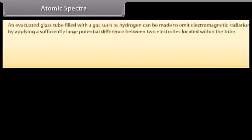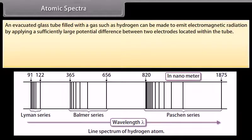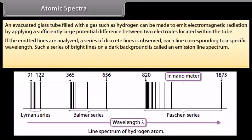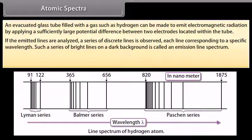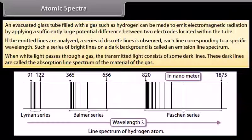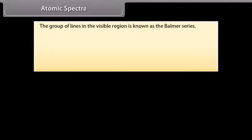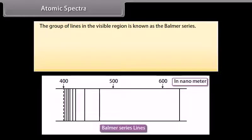An evacuated glass tube filled with a gas such as hydrogen can be made to emit electromagnetic radiation by applying a sufficiently large potential difference between two electrodes. If the emitted light is analyzed, a series of discrete lines are observed, each corresponding to a specific wavelength. Such a series of bright lines on a dark background is called an emission line spectrum. When white light passes through a gas, the transmitted light consists of some dark lines, called the absorption line spectrum. The group of lines in the visible region is known as the Balmer series.